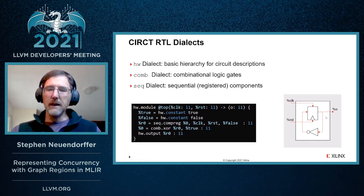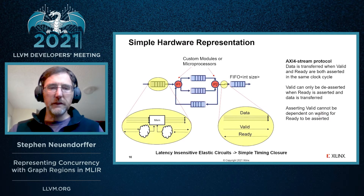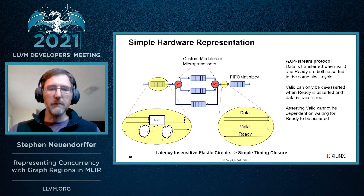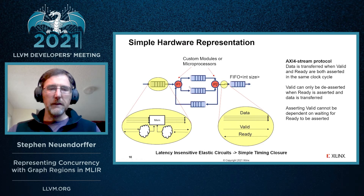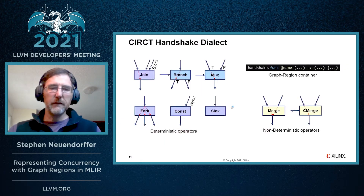The circuit we're actually representing is shown on the right — it just toggles forever every time the clock is triggered. We can also have more complex representations of hardware. A representation often used in many large designs is for representing latency-insensitive circuits, where each operation is called a process and processes communicate by sending messages through FIFOs. Each FIFO can be represented as a memory with some control logic, and each connection between a process and a FIFO can be represented as a set of wires with a handshake. The CIRCT project also has a handshake dialect useful for representing these kinds of handshake circuits.